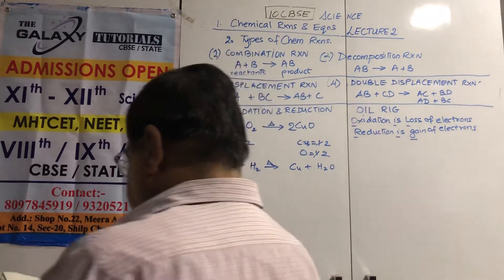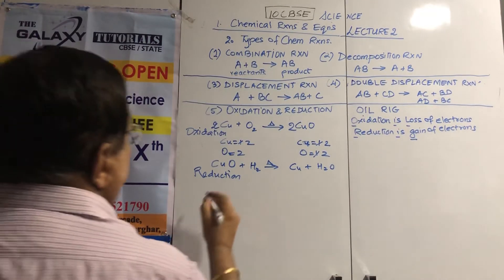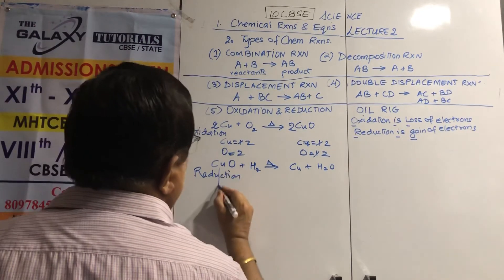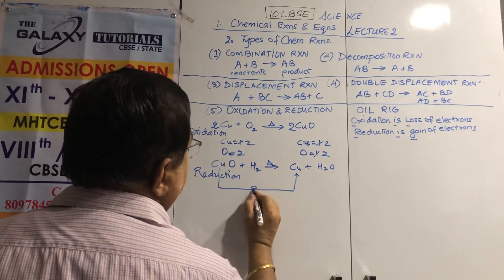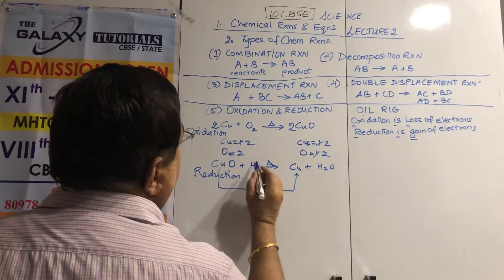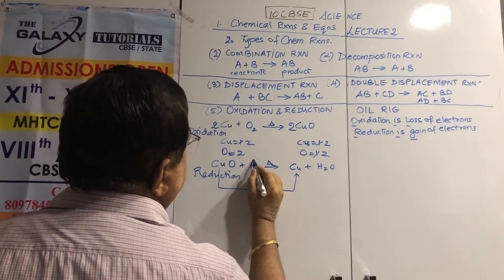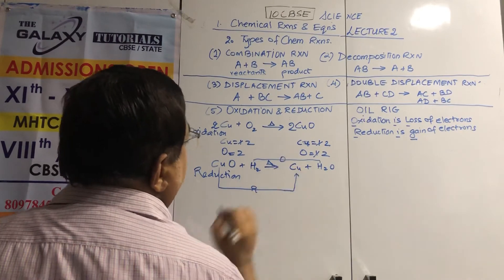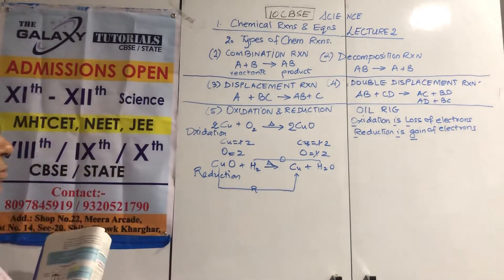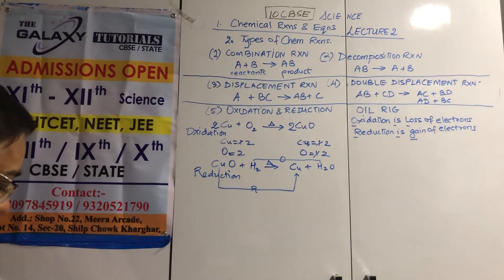In CuO + H2 → Cu + H2O: copper has lost oxygen, so it is reduced; hydrogen has gained oxygen, so it is oxidized. The electrons cannot disappear — they must come from somewhere and go to someone.